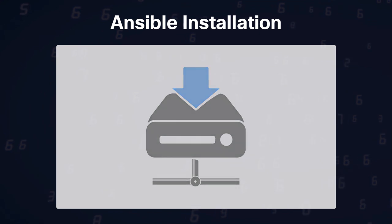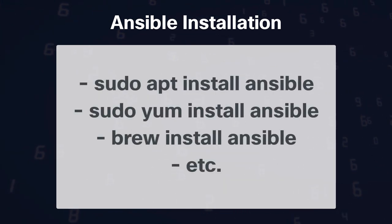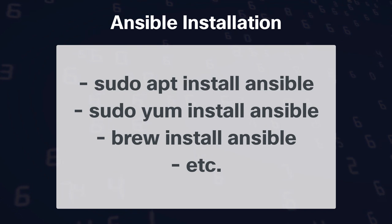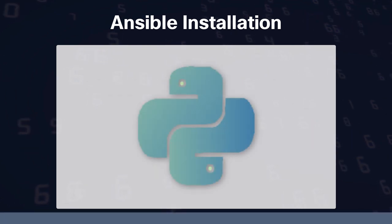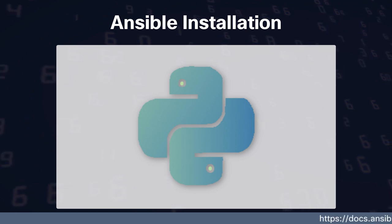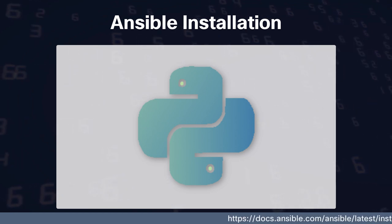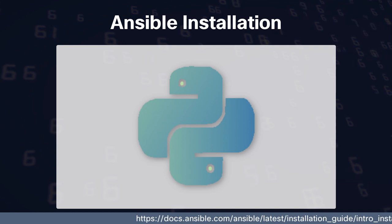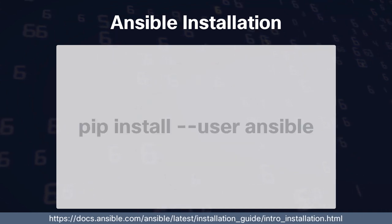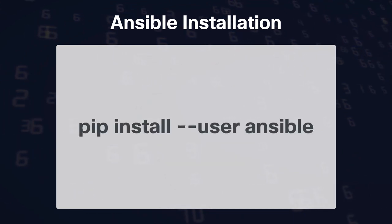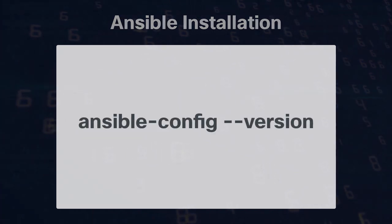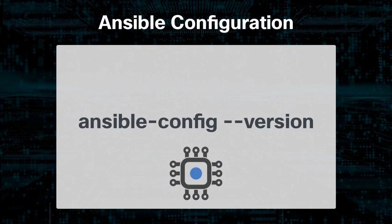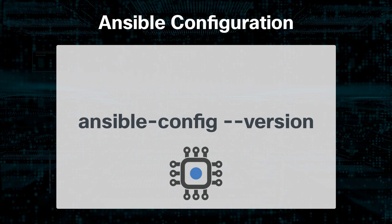The first thing we need to do is install Ansible if it isn't installed already. There are several ways to do this depending on your operating system. Ansible is written in Python, so I've installed Ansible with the Python package manager pip, which the Ansible docs also recommend. The command to install is: pip install --user ansible. To confirm installation, type: ansible-config --version.